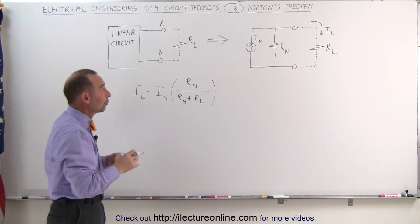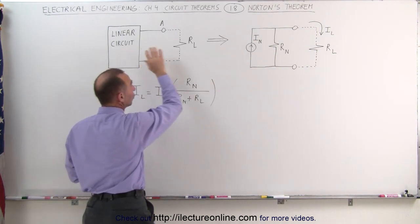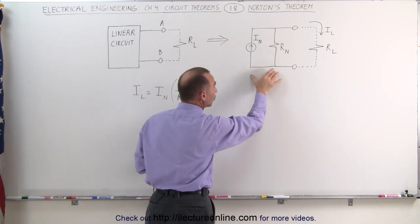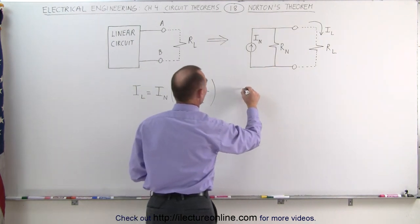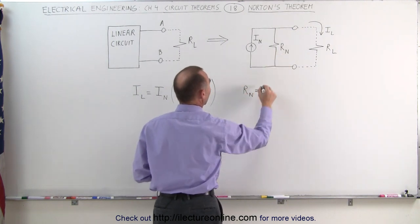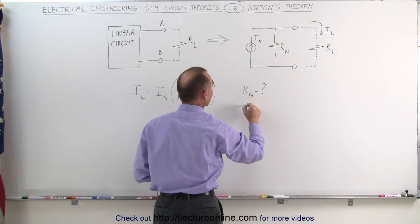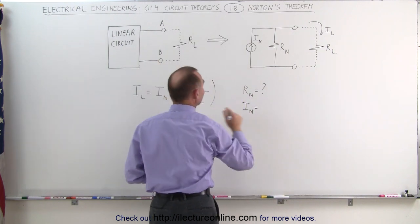The question then becomes, in order for us to be able to do this, to convert the linear circuit into the Norton circuit and then use that to determine the current through the load resistor, we must find R sub n, we must find out what this resistor is equal to, and we must find I sub n, the current of the source represented of the linear circuit.